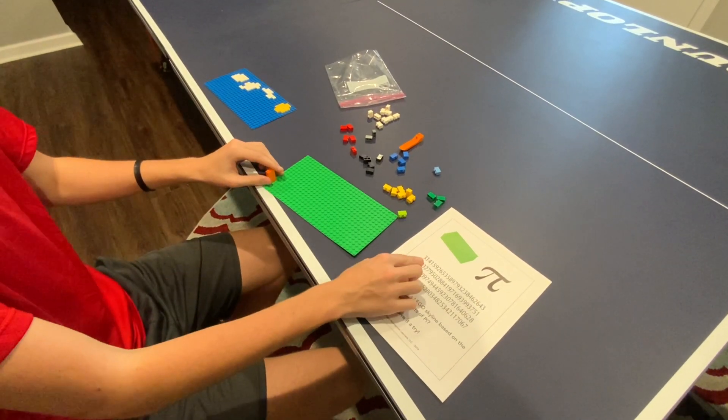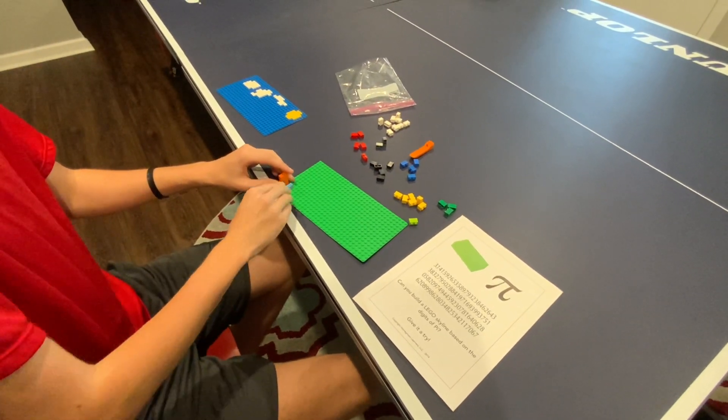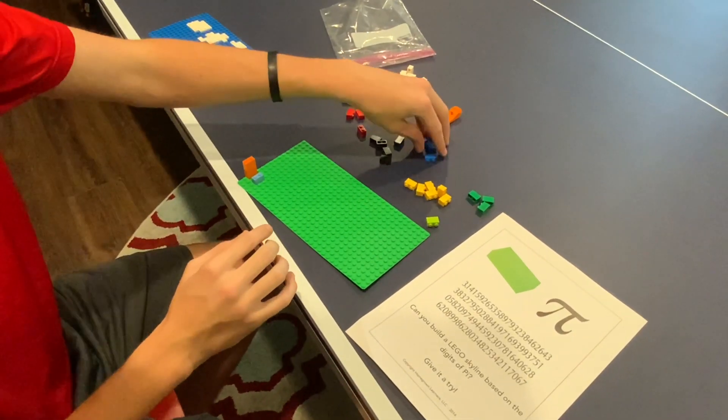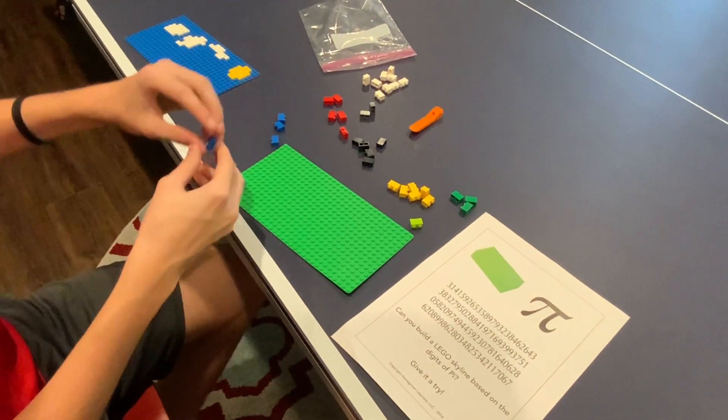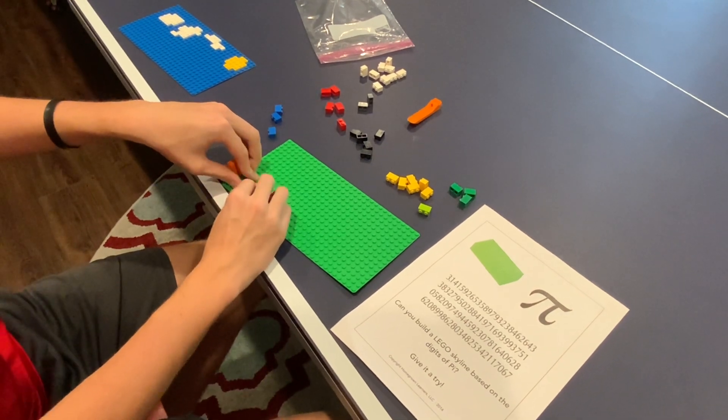Now the next number of pi is one. So light blue, one. Then the next number is four. So I have four regular blues. I'm actually going to space this out by two studs.